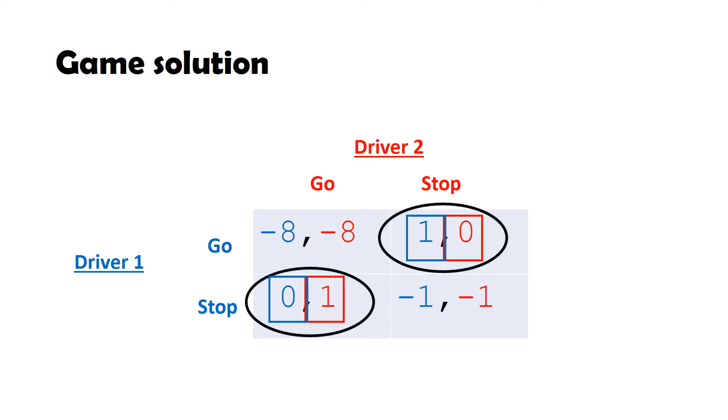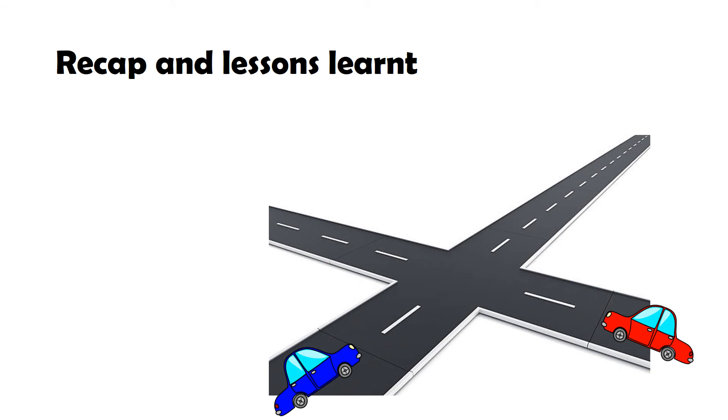This is where in real life, traffic lights come in handy. They will force the game into either Nash equilibrium by acting as a signal that lets the players coordinate to an action that neither has an incentive to move away from.